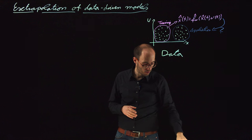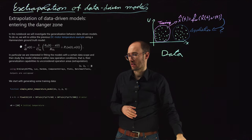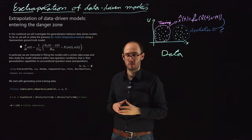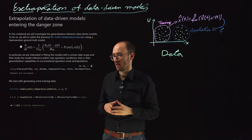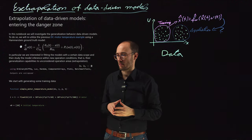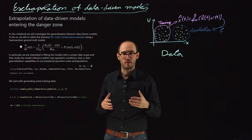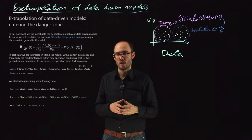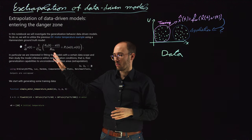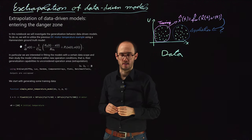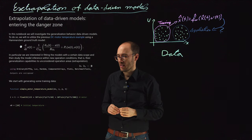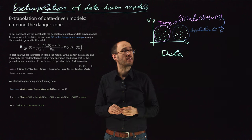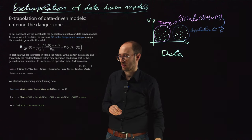And I would like to put that to an example using one of the previous applications which we have already seen in one of the previous videos, which is the DC motor temperature example, where we have used a Hammerstein neural ordinary differential equation approach in order to describe the thermal behavior of a simple DC motor model. And I just want to bring you an example on this extrapolation issue given this model approach.